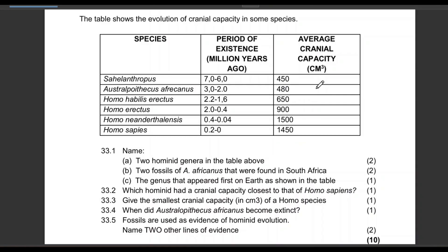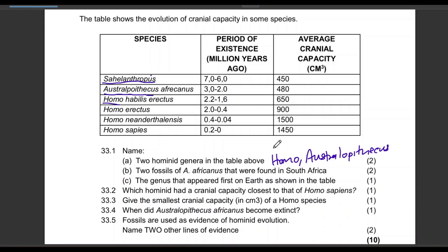The first question: name the two hominid genera in the table. The first is Homo, and the second is Australopithecus. You could also include Sahelanthropus, but they've only asked for two, so those are the two hominid genera.